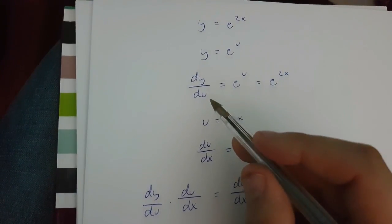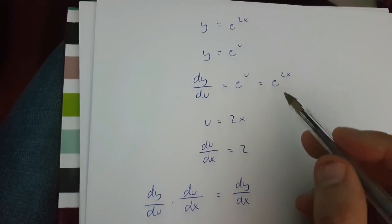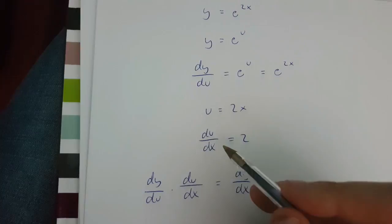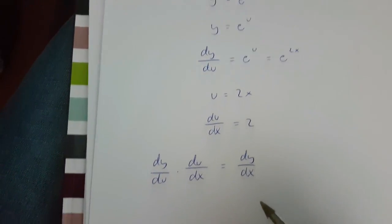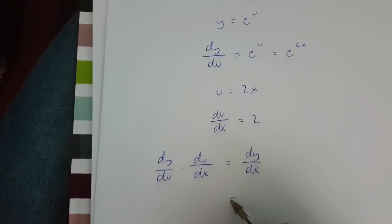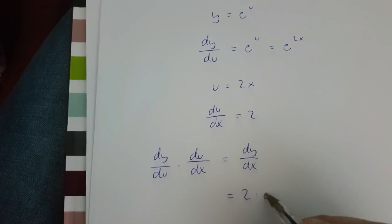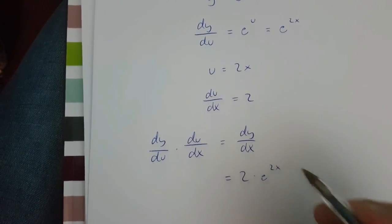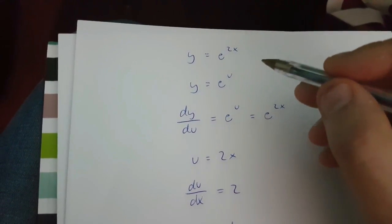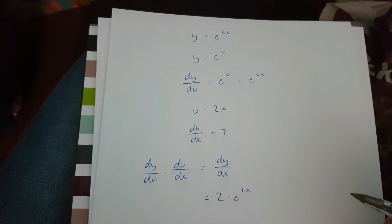Since dy over du is e to the power of 2x and du over dx is 2, then dy over dx is 2 times e to the power of 2x. And this is y equals e to the power of 2x differentiated.